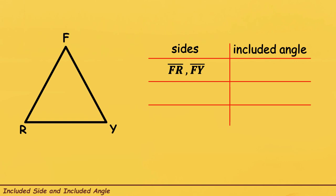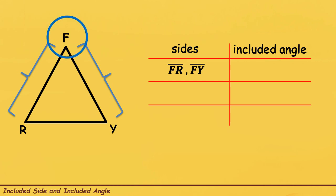What is the Included Angle of Line Segment FR and Line Segment FY? First thing to do, hanapin muna natin yung dalawang sides na yun sa ating given triangle. This is Line Segment FR, and this is Line Segment FY. For us to get the Included Angle, ito yung angle na napaggigitnaan nung dalawang sides na yun. Kitang-kita natin na ang angle na yun is Angle F, kasi nasa gitna yung Angle F ng dalawang sides of the triangle. So, the Included Angle of Line Segment FR and Line Segment FY is Angle F.